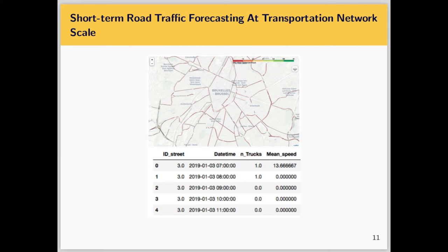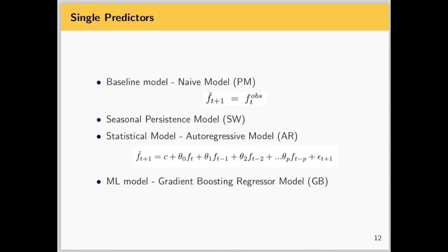We employed both single models and adaptive strategies at the transportation network scale. First, we implemented a baseline naive model that takes the last observed value as the prediction for the next time step — easy to implement and very effective in practice despite requiring low computational effort. We then implemented a seasonal persistent model where, within a sliding window, we consider observations at the same hour and day across the previous one-week season and compute their mean as a persistent forecast.